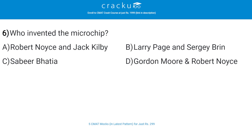Who invented the microchip? The correct answer is A, Robert Noyce and Jack Kilby. Robert Noyce invented the first monolithic integrated circuit chip at Fairchild Semiconductor in 1959. It was made from silicon and was fabricated using the planar process.